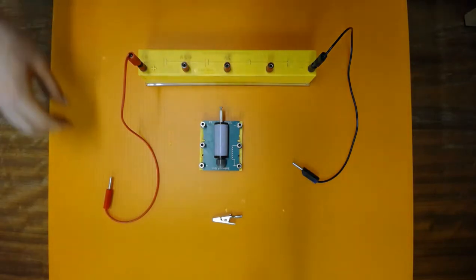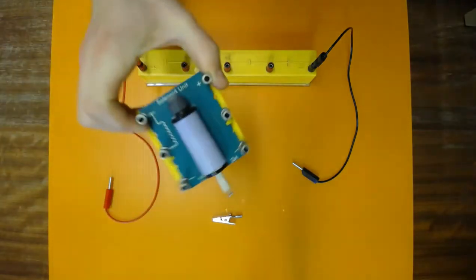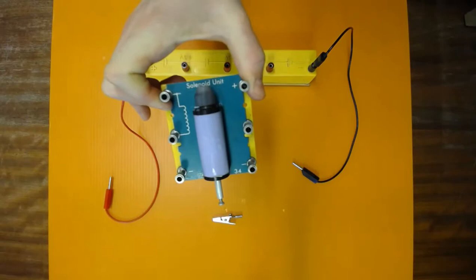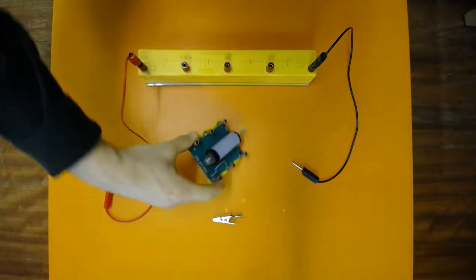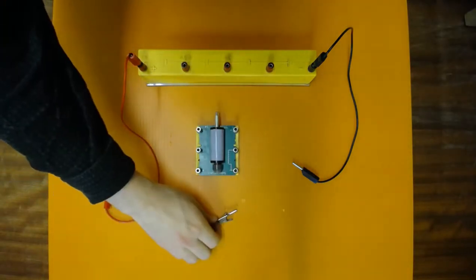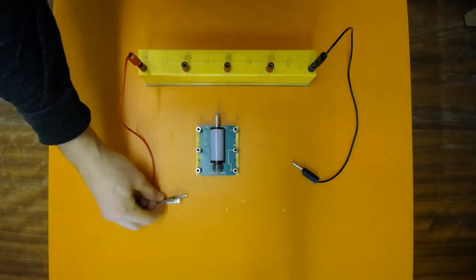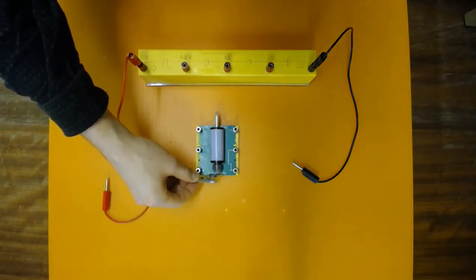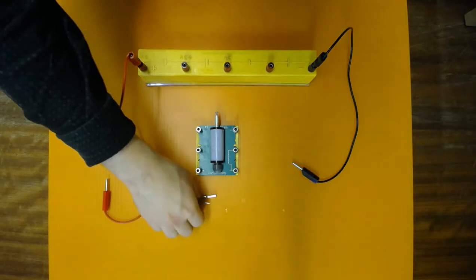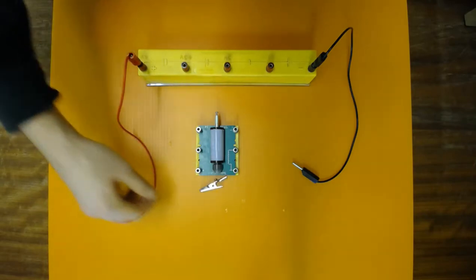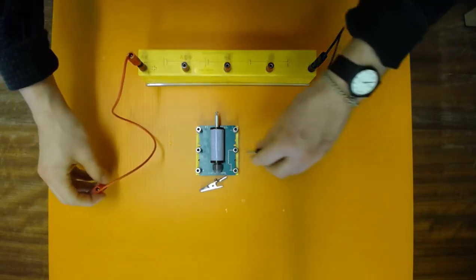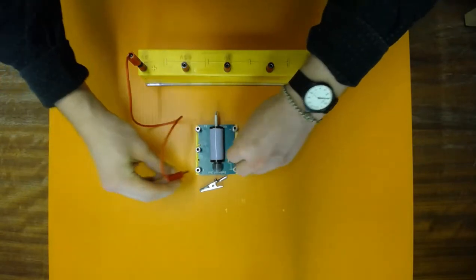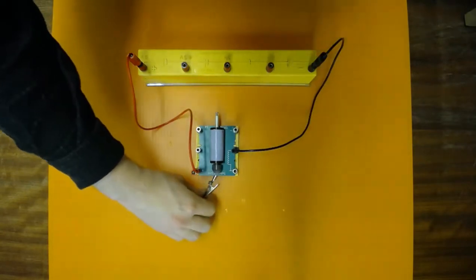The next output transducer is the solenoid unit. So before we connect it to the battery board, I'm just going to check it's not magnetic. And then connecting, we can see...